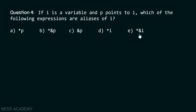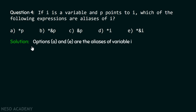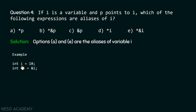Options a and e are the aliases of variable i — that is, `*p` and `*&i` — as they give the same value as variable i. Let's see how. We have a variable i containing value 10 and a pointer p pointing to variable i.